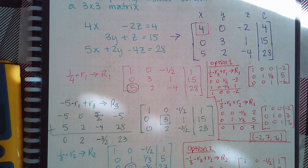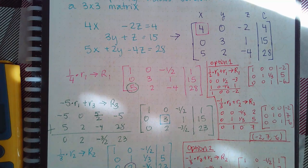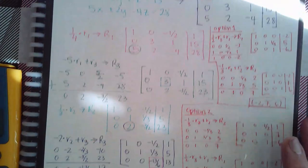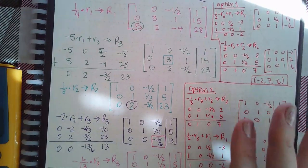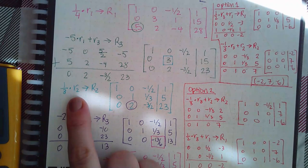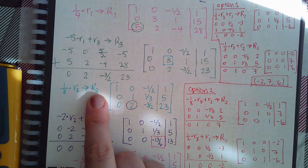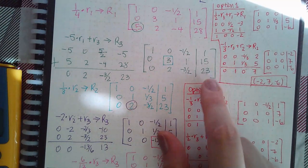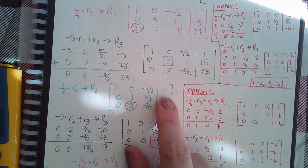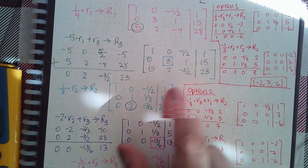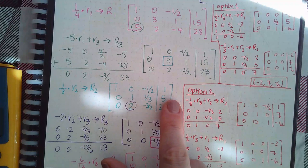The next step is I have to make a leading one first — the three needs to become a one. We turn things into one by multiplying by the reciprocal. The reciprocal of three is one-third, so I did one-third times row two to give me my new row two. Row one and row three stay exactly the same, and each of those three entries in row two multiplied by one-third gives me these new entries.